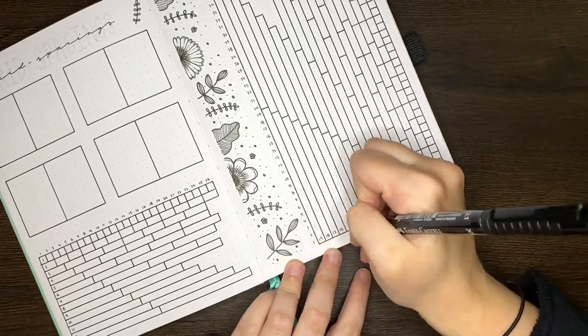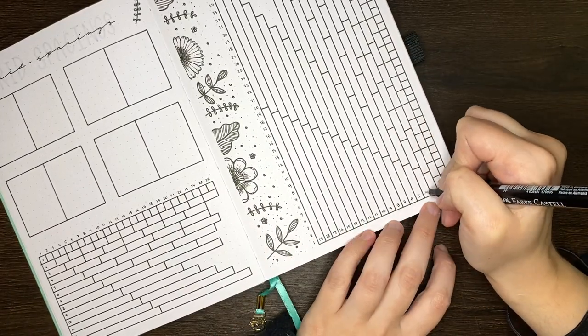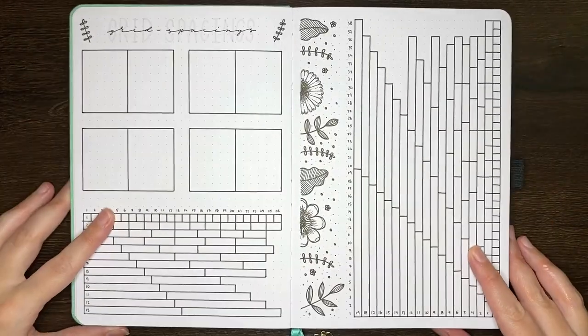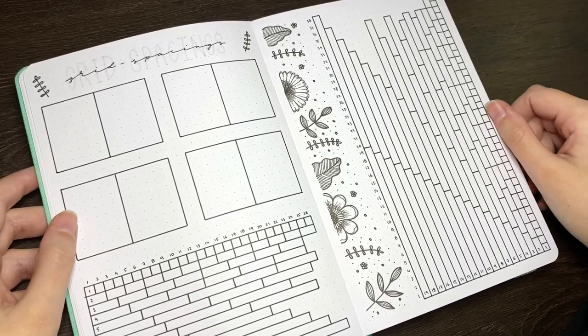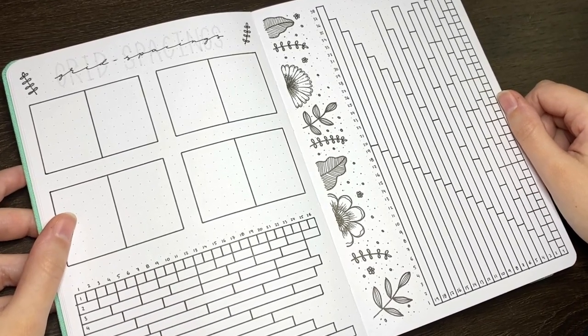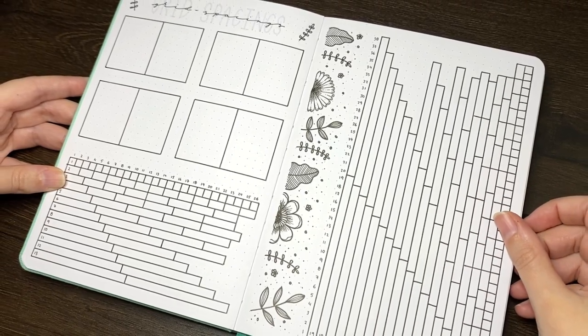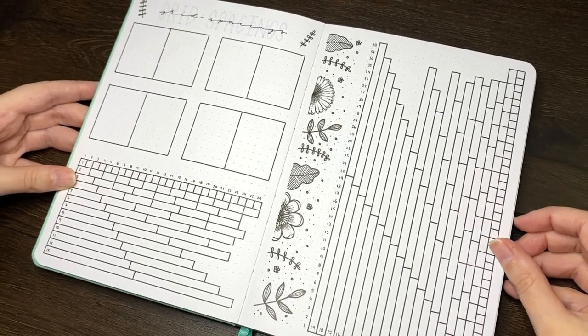Keeping in mind that we want whatever page you have your grid spacing guide on to be easily referenceable, if you're putting it at the front of your journal it would be good to have it on the left hand page. If you're keeping it at the back it would be more handy to have it on the right.